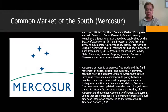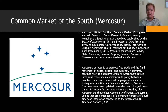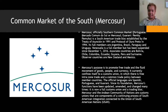Mercosur, officially the Southern Common Market, is a South American trade block established by the Treaty of Asunción in 1991 and the Protocol of Ouro Preto in 1994. Its full members are Argentina, Brazil, Paraguay, Uruguay, and Venezuela — though Venezuela has been suspended since December 1, 2016. Associate countries include Bolivia, Chile, Colombia, Ecuador, Guyana, Peru, and Suriname. Observer countries are New Zealand and Mexico. Its purpose is to promote free trade and the fluid movement of goods, people, and currency.